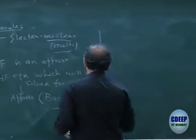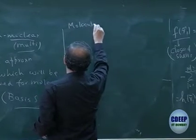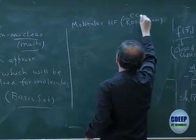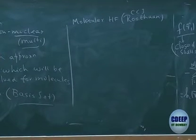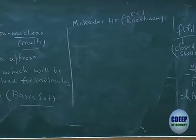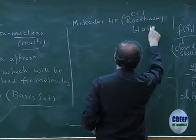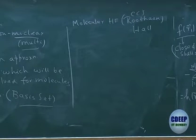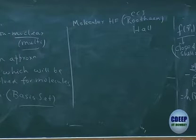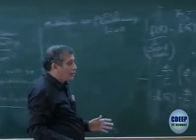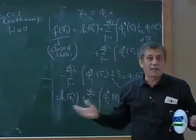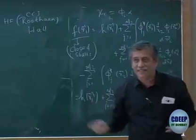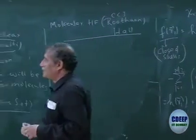This approach was worked out for molecular Hartree-Fock by Roothaan and Hall — very famous seminal papers from around 1960 known as the Roothaan-Hall equations. It was done first for closed-shell systems and then extended to open-shell. Later, Pople and Nesbet introduced similar equations for open-shell cases, referred to as the Pople-Nesbet equations. For now, let us focus on the Roothaan-Hall equations.